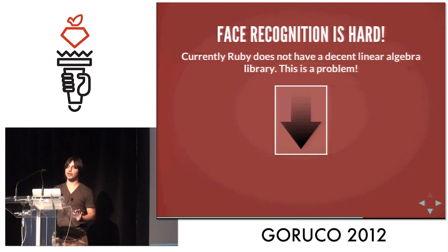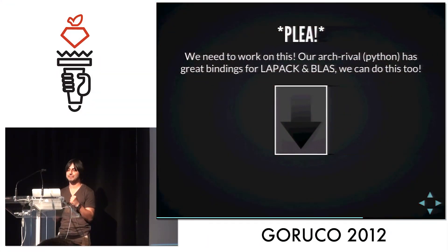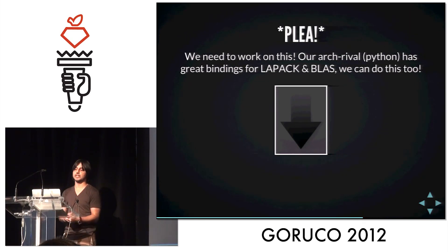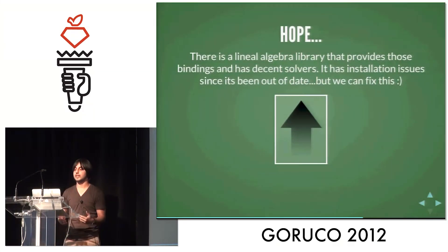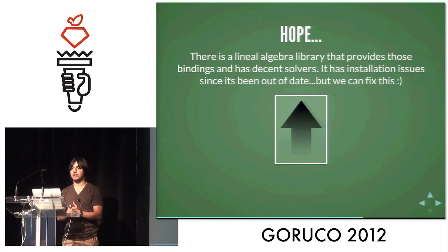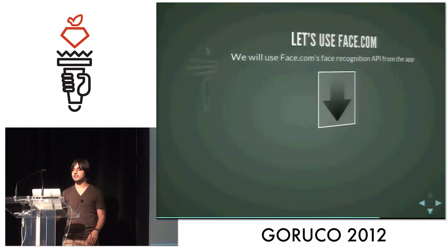Face recognition is actually very hard. I was really hoping to implement a face recognition algorithm in MacRuby, but Ruby has a problem — there are no decent linear algebra libraries in Ruby, which definitely would make this possible, and I really think we should work on this. The good news is that there is a lin-alge library that's pretty good and has a lot of solvers, but it's a little out of date, so we just need to give it a little bit of a push and I think we'll be in good shape.